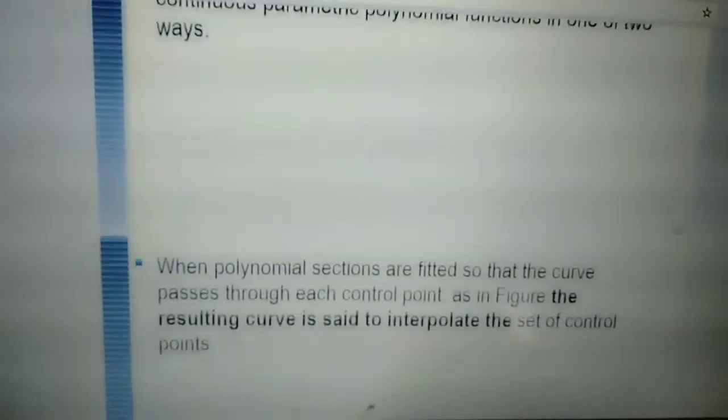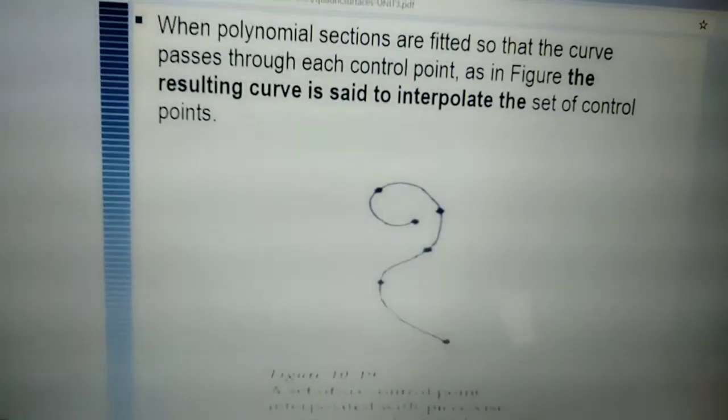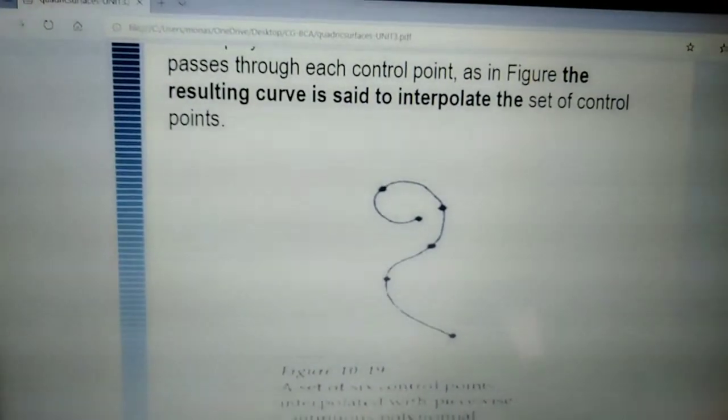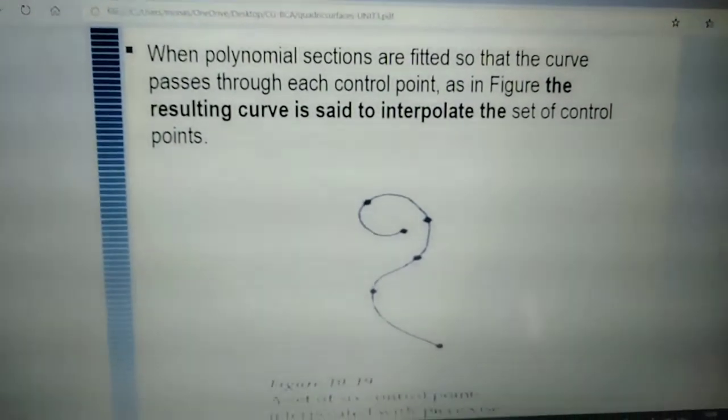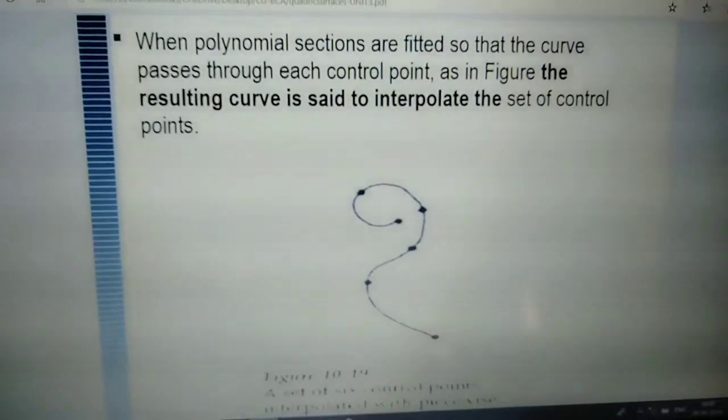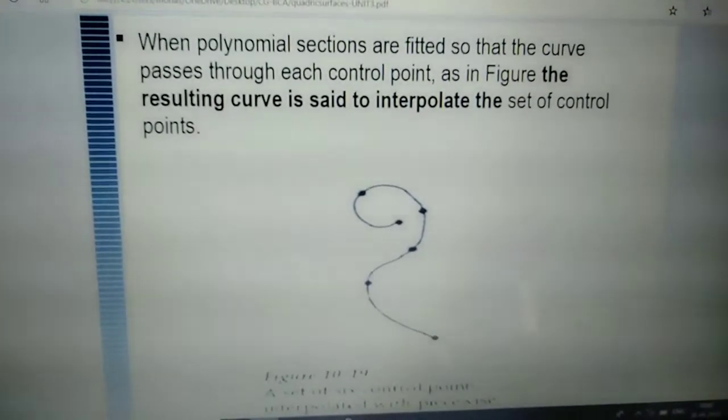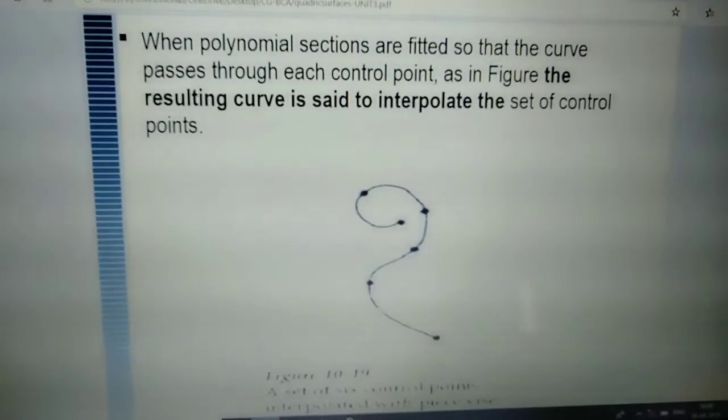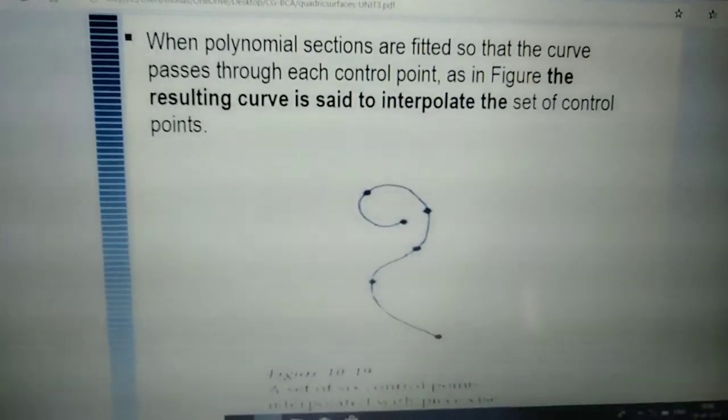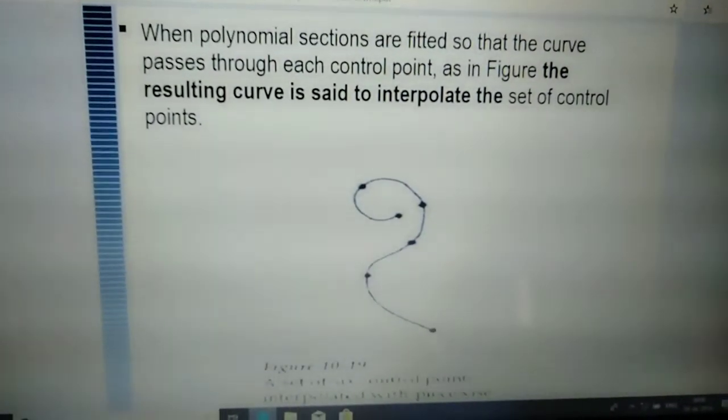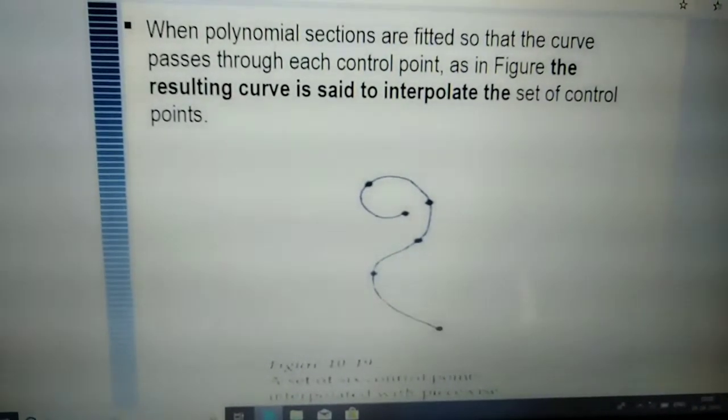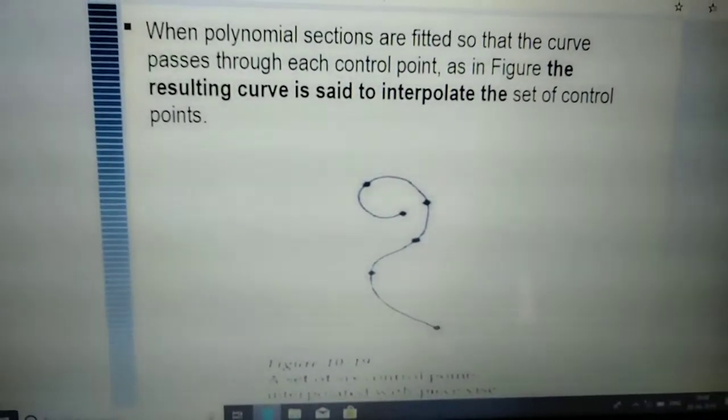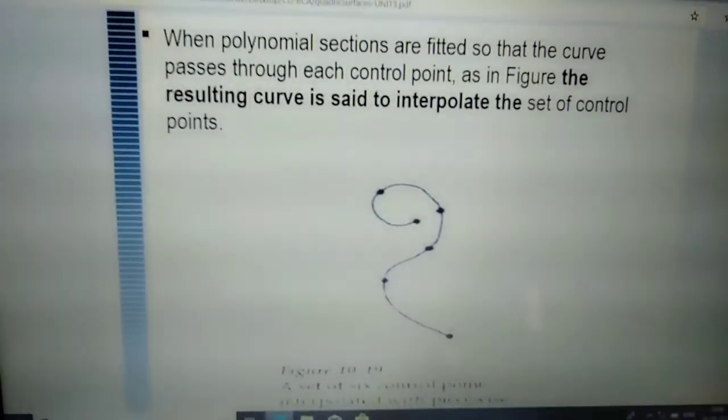This diagram you can see is of an interpolation spline. When polynomial sections are fitted so that the curve passes through each control point, the resulting curve is said to interpolate the set of control points. This figure shows a set of control points with interpolation and parametric continuity.